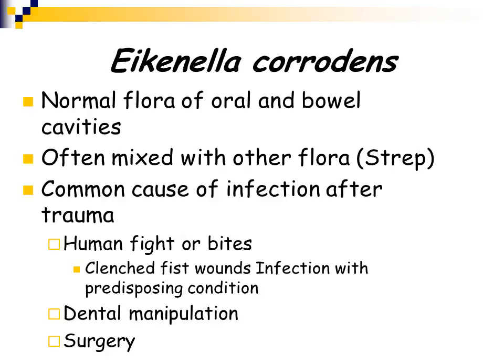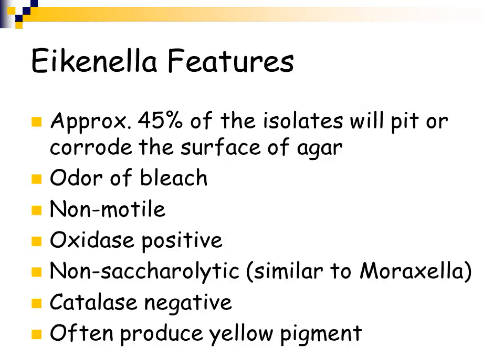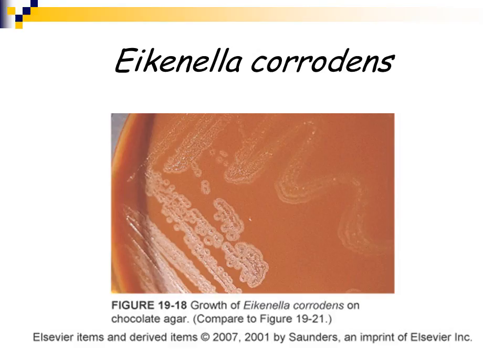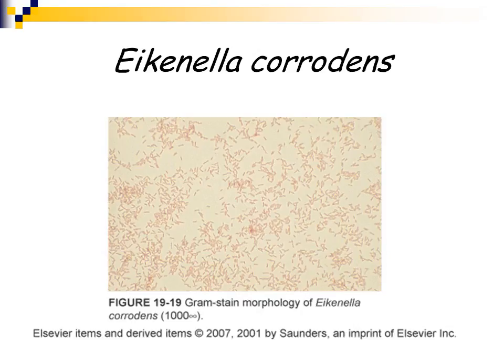Eikenella corrodens is also a common cause of infection after dental manipulation and after surgery. Approximately 45% of Eikenella corrodens isolates will pit or corrode the surface of the agar. It has an odor of bleach — a characteristic odor that is a differentiation feature, though we never smell our plates. It is non-motile, oxidase positive, and nonsaccharolytic — it does not ferment and does not utilize sugar in the presence or absence of oxygen, similar to Moraxella catarrhalis. It is catalase negative and often produces a yellow pigment. Here is Eikenella corrodens growing on chocolate agar, showing agar pitting and corrosion, along with a gram stain showing typical gram-negative rods.